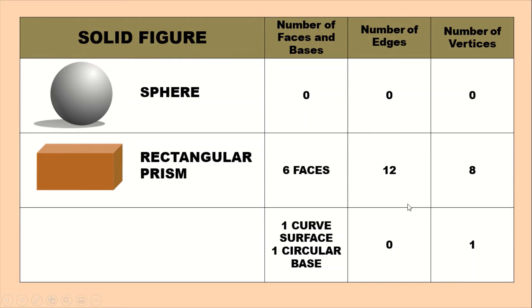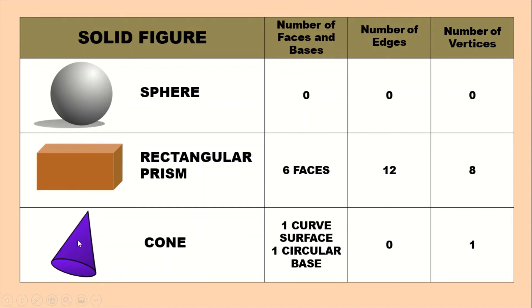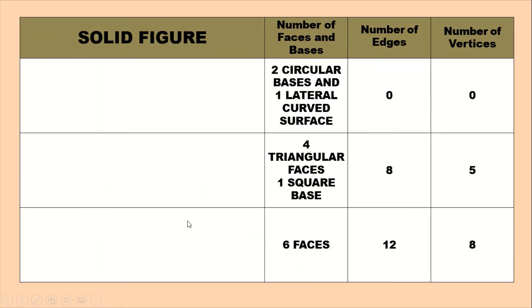Number three is a cone, which has the shape of a triangle with a circle at the base. A cone has two faces: one curved surface and one circular base. The number of edges is zero, and the number of vertices is just one — the tip at the top.